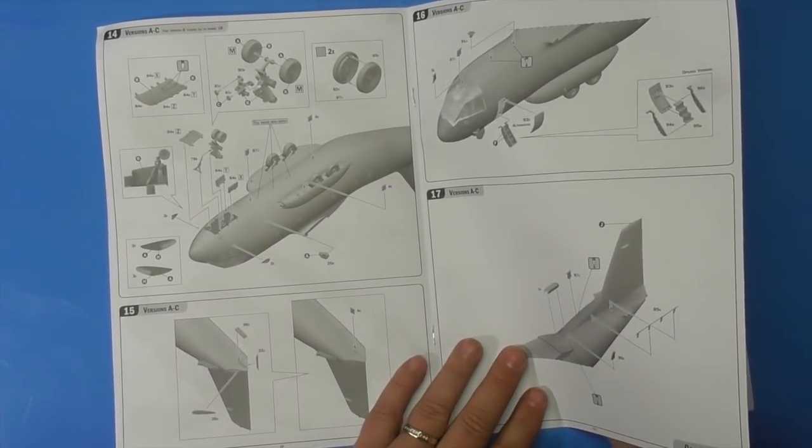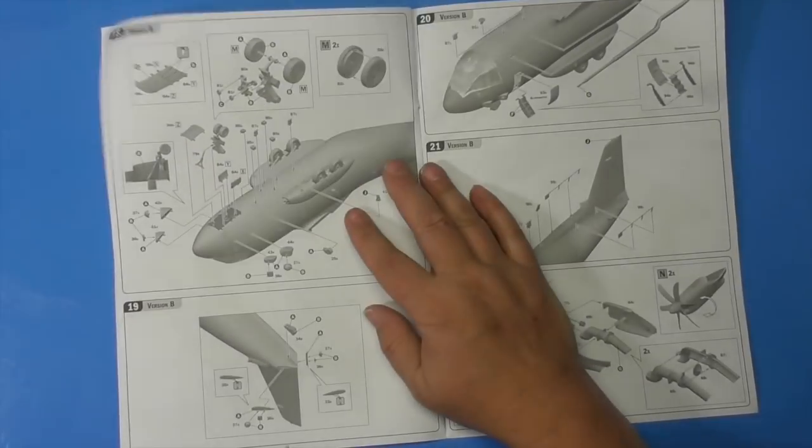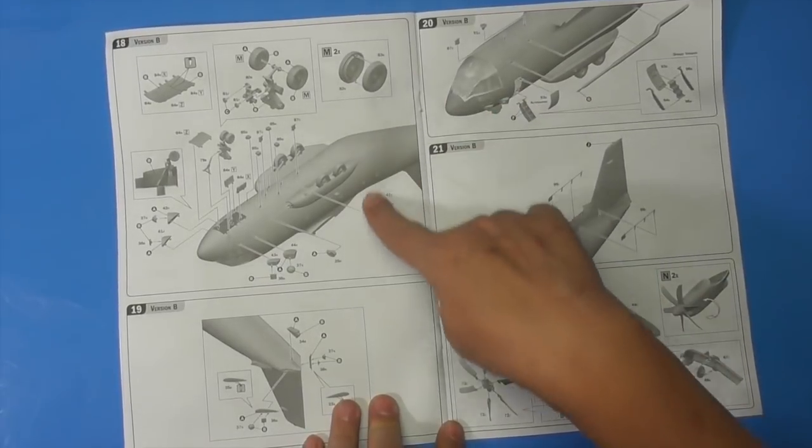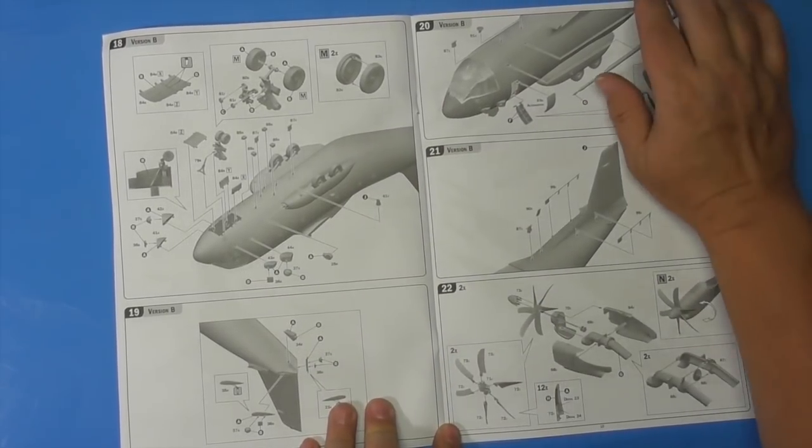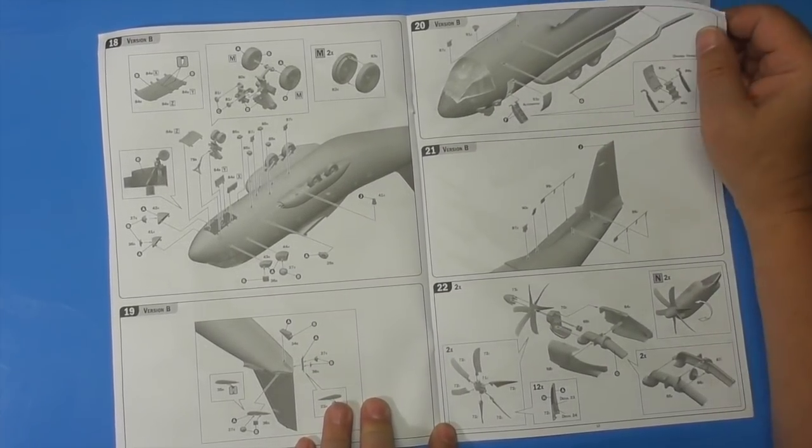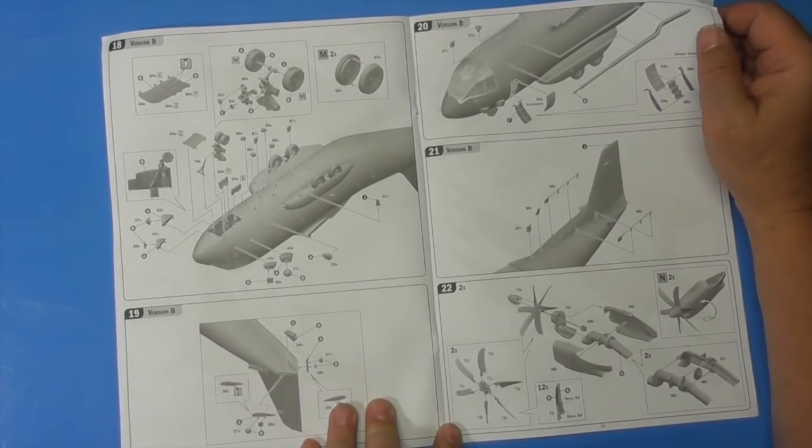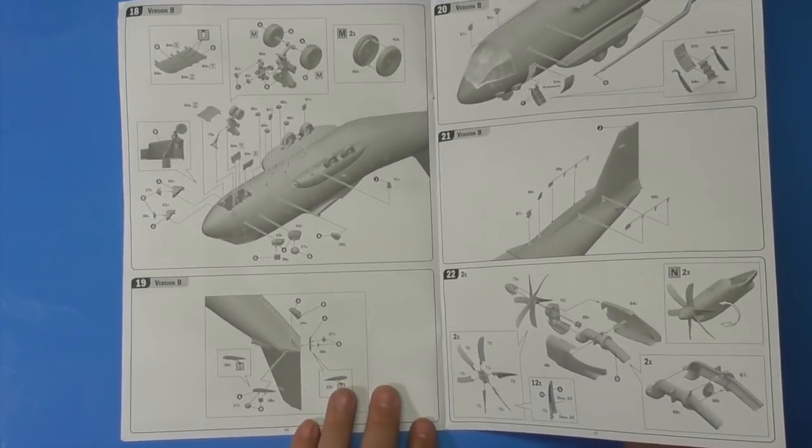This is version A through C, these parts here. A or C. This is version B, these parts here. Then you're back to this part with the engines, which is for every version. So pay attention to your versions. I'm thinking version B is the Italian, because A and C are the Coast Guard and the Army.